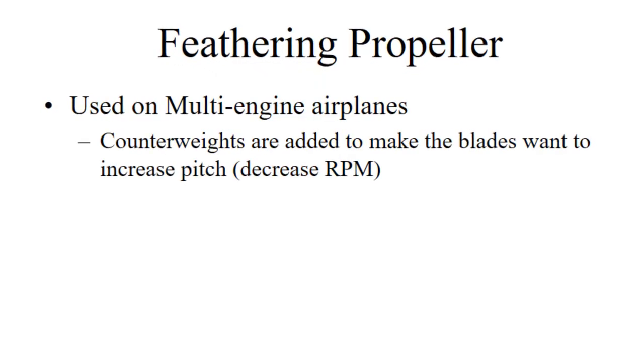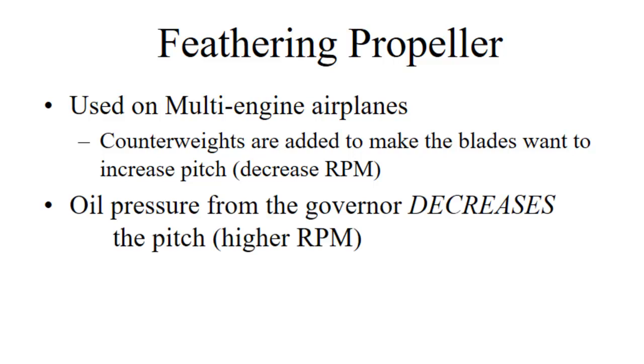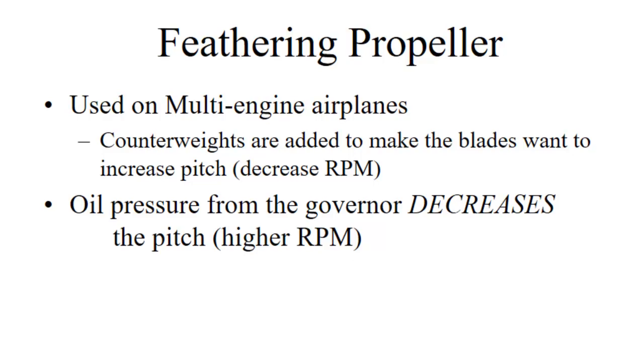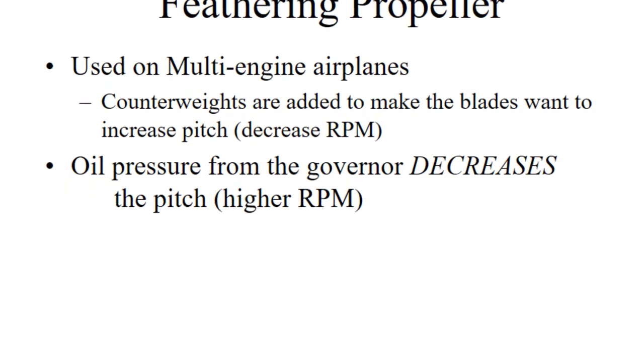A feathering propeller is used on multi-engine airplanes and some counterweights are added to the blades to make them want to increase pitch instead of decrease pitch. Oil pressure from the governor decreases the pitch. So we hook it up kind of backwards. In the case of a feathering propeller, we send oil out to decrease the pitch. And if there's no oil pressure, the propellers will automatically go to feather, which stops the engine from turning.